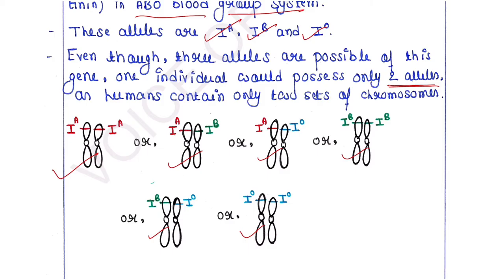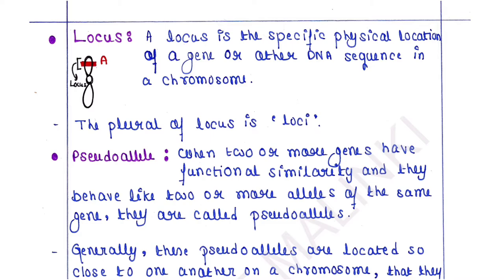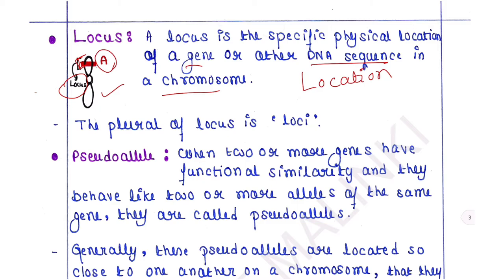Next is locus. A locus is the specific physical location of a gene or other DNA sequence in a chromosome. In this picture, you can see capital A allele is located at a specific part of this chromosome — that part is called the locus. Locus comes from location. The plural of locus is loci, so you will sometimes see the word loci, which is the plural form of locus.